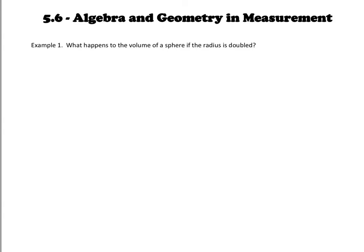So take a look at this one, example one. What happens to the volume of a sphere if the radius is doubled? One approach to this question is what we're going to call the numeric approach. So we're going to actually just choose numbers and plug them into our volume of a sphere formula. So first if we remember our volume of a sphere formula, is volume equals 4 pi r cubed divided by 3.